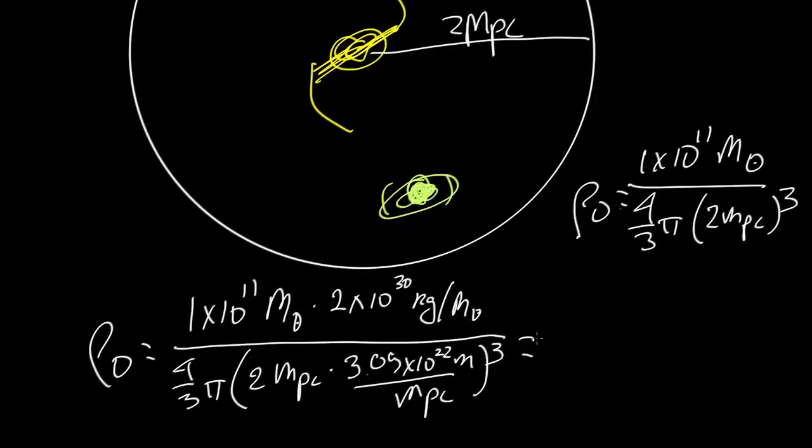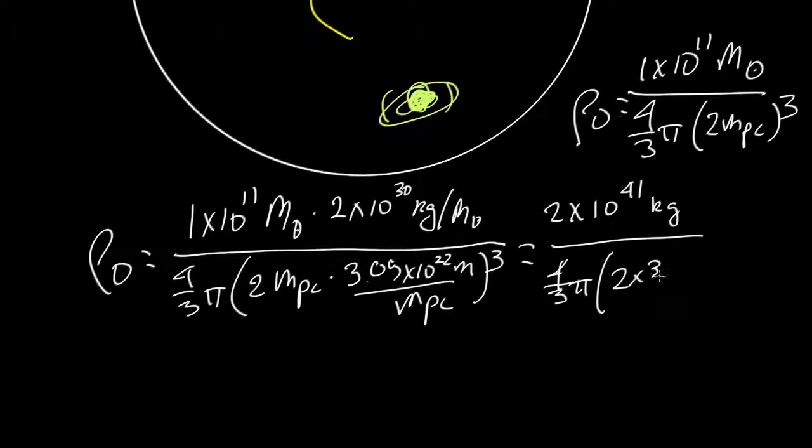And so in our little local part of the universe, there's 2 times 10 to the 41 kilograms, and that is all in a volume, where we have 4 thirds pi times 2 times 3.09 times 10 to the 22 meters. So the megaparsecs cancel, that whole thing is cubed.